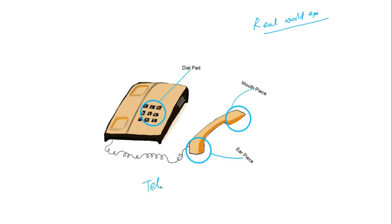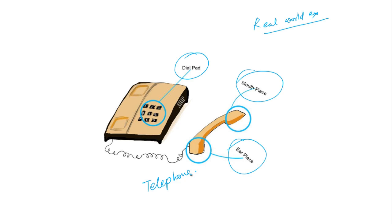We have a telephone here. In order to use a telephone, I need to be aware of certain parts: there is a dial pad where I can key in the number, and there's a mouthpiece as well as an earpiece where I can listen and speak. So that's the way a telephone gives us an abstraction.